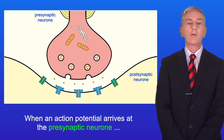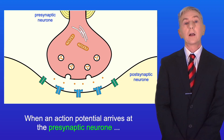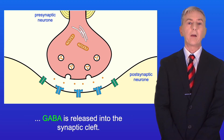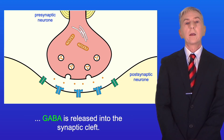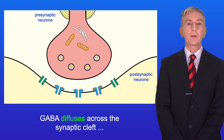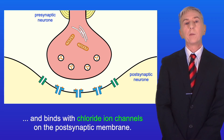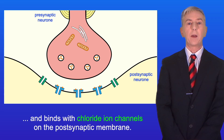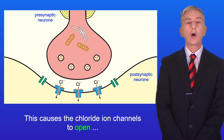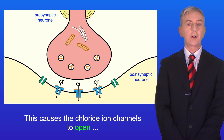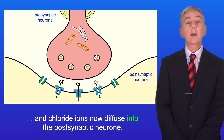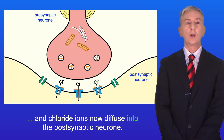When an action potential arrives at the presynaptic neuron, GABA is released into the synaptic cleft. GABA diffuses across the synaptic cleft and binds with chloride ion channels on the post-synaptic membrane, causing the chloride ion channels to open so that chloride ions diffuse into the post-synaptic neuron.